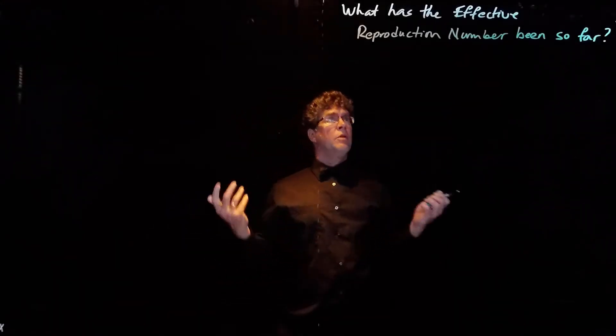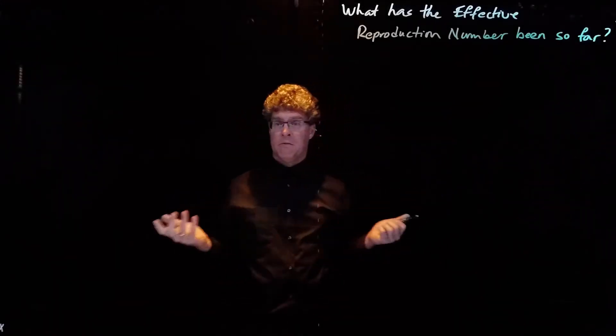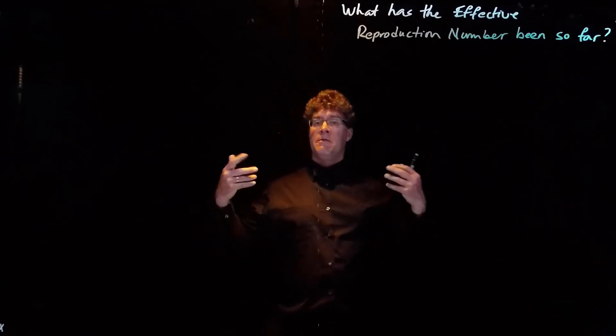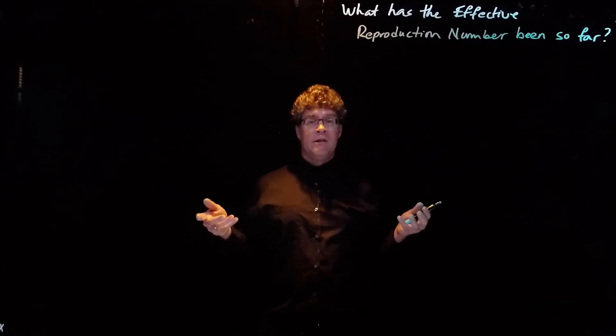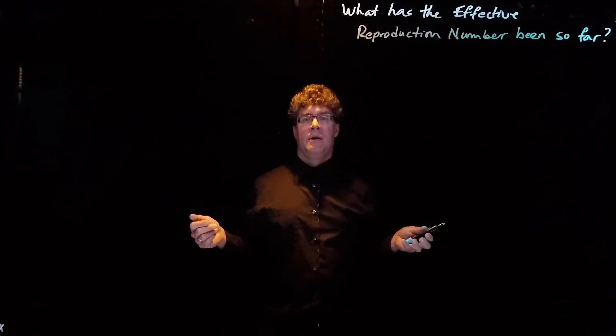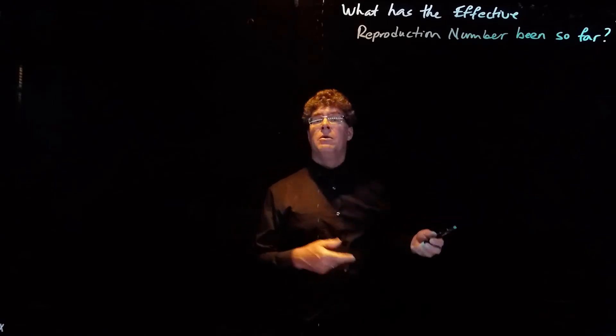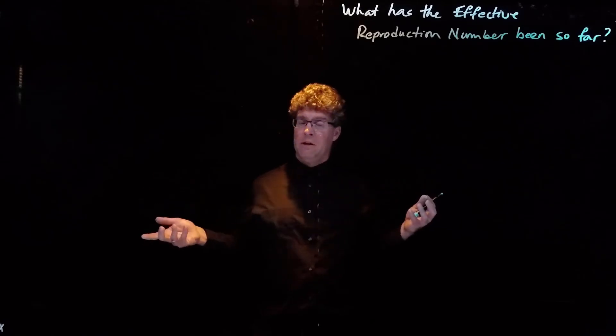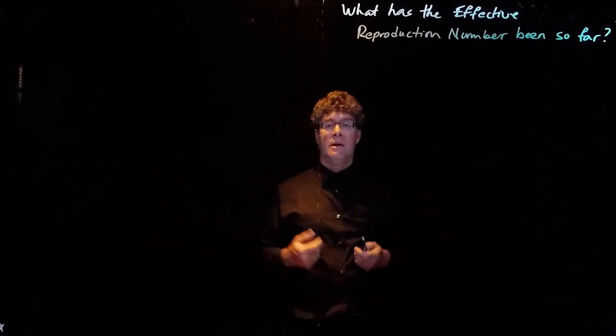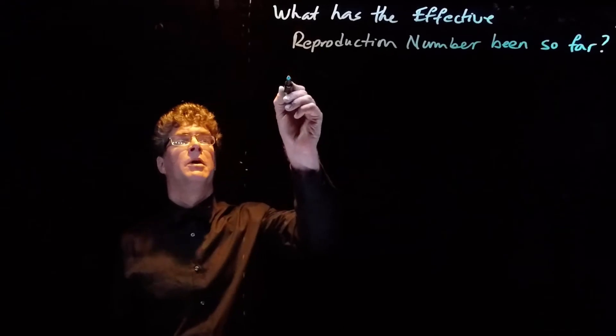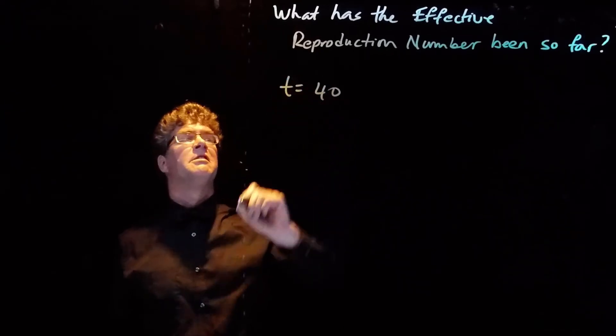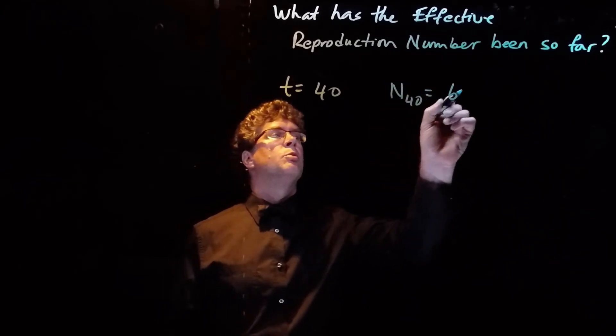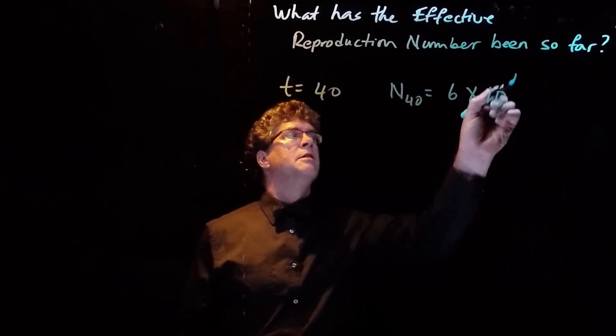So we can try to calculate what the effective reproduction number has been so far for COVID-19. We saw that if there was a lot of social distancing, the effective reproduction number would be small, and the disease would die out very quickly. Our model with R₀ equals 2 saw that the disease would grow very quickly. The reality is somewhere in between. In fact, at about time t equals 40 weeks, we have N_40 is equal to approximately 6 million people.